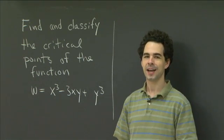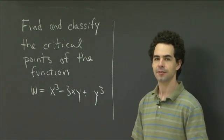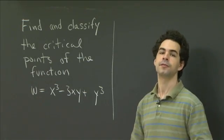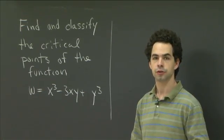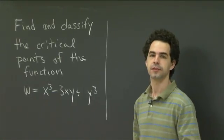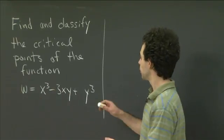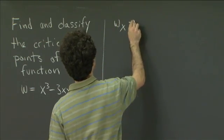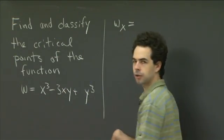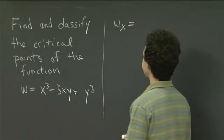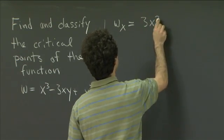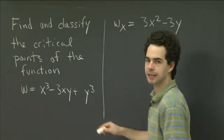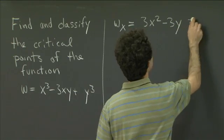Hopefully you had some luck working out the solution to this question. Let's have a go at it. In order to find the critical points, we need to look at the first derivatives. The critical points are the points where both partial derivatives — or all partial derivatives if we had a function of more variables — are equal to 0. So the first partial w sub x, the partial with respect to x, is going to be 3x squared minus 3y, and we want that to be equal to 0.